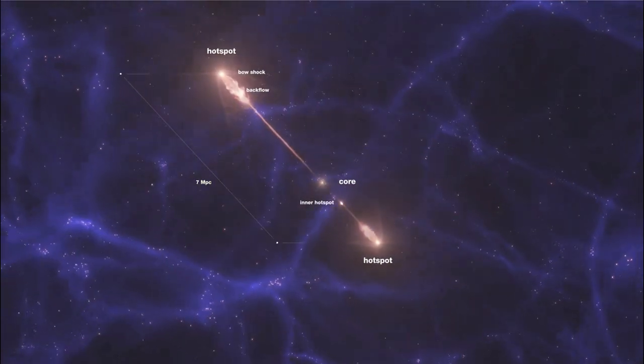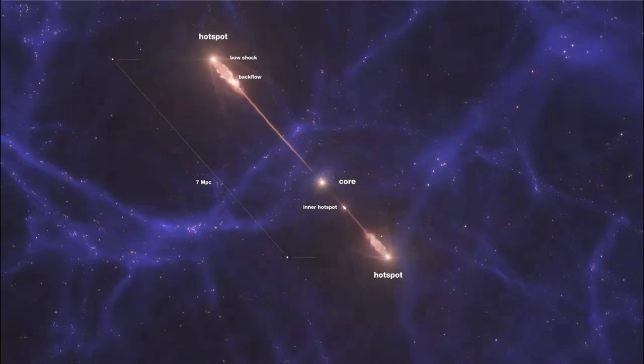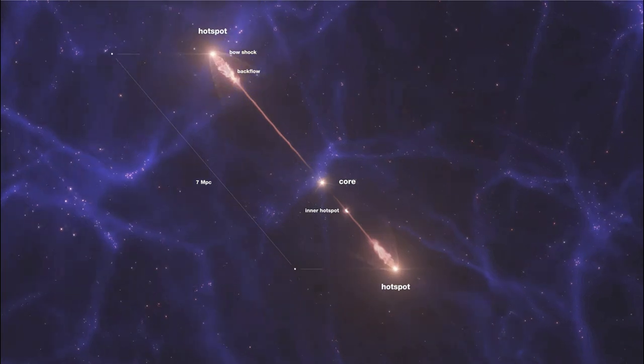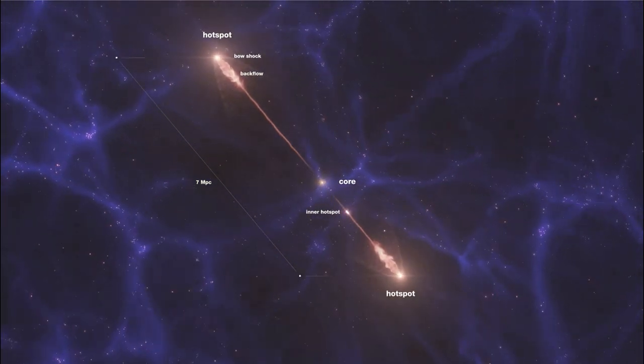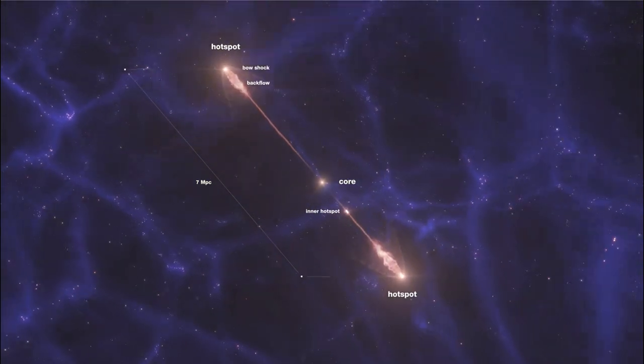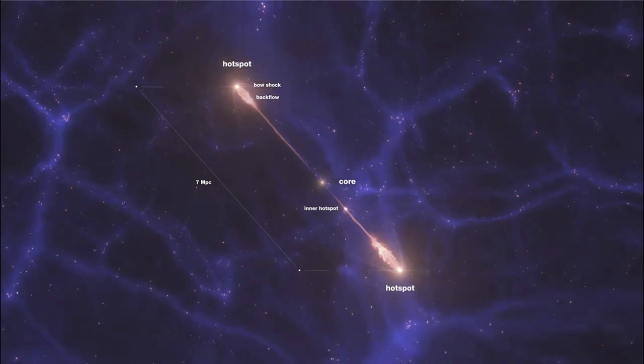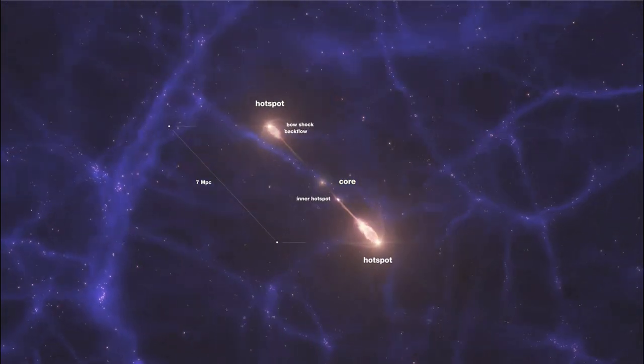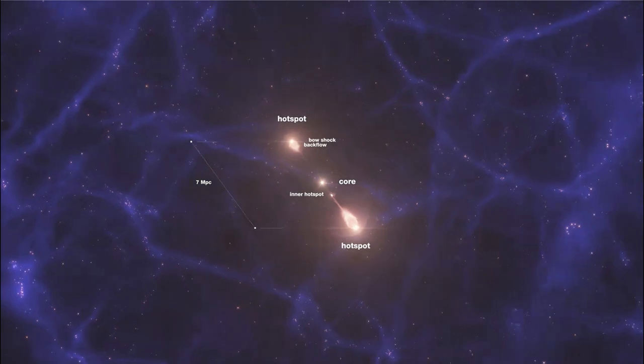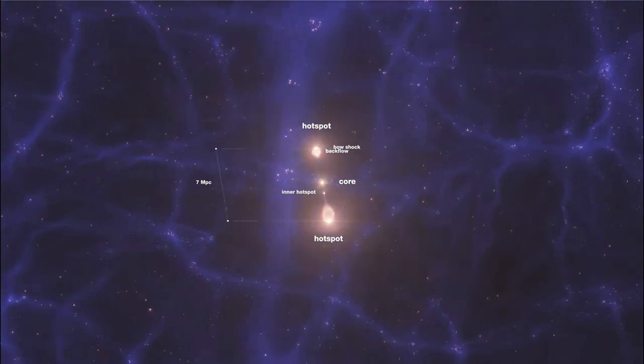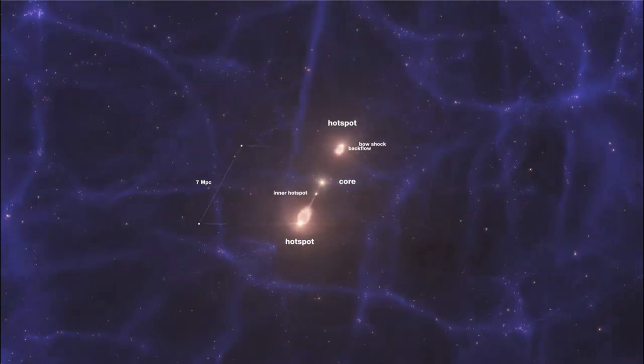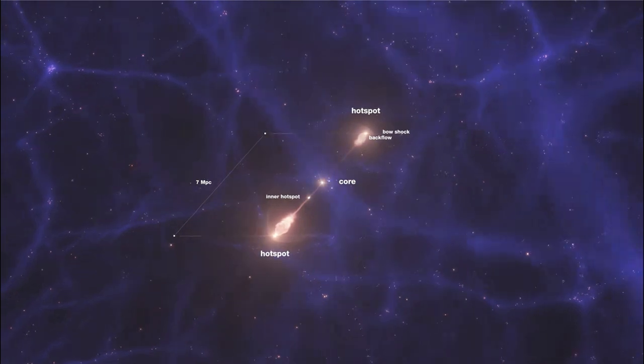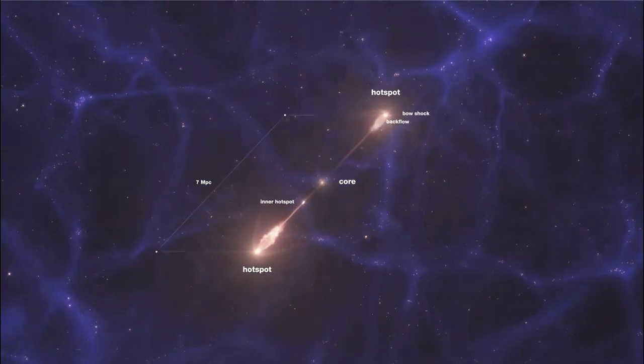So that still means that it can take millions of years for it to get from the core around the black hole out to that hot spot at the very end. So if this is 23 million light years across, that would mean it still takes from the black hole to the center nearly 12 million years for the material to get from one to the other.